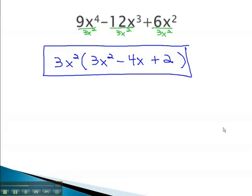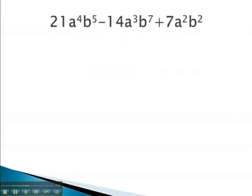Let's try another example, where we identify the greatest common factor and pull it in front of the parentheses. Looking at the numbers 21, 14, and 7, we see they are all divisible by 7. Also, every factor has an a. Using the lowest exponent, we write a squared. Every factor also has a b. Using the lowest exponent, we write b squared.